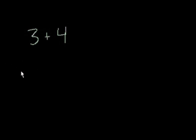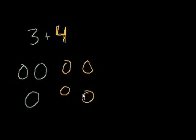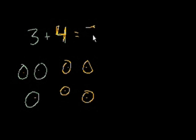Let's say I have 3 avocados — 1, 2, 3. And let's say you were to give me 4 more avocados — 1, 2, 3, 4. So how many total avocados do I have now? That's 1, 2, 3, 4, 5, 6, 7 avocados. So 3 plus 4 is equal to 7.